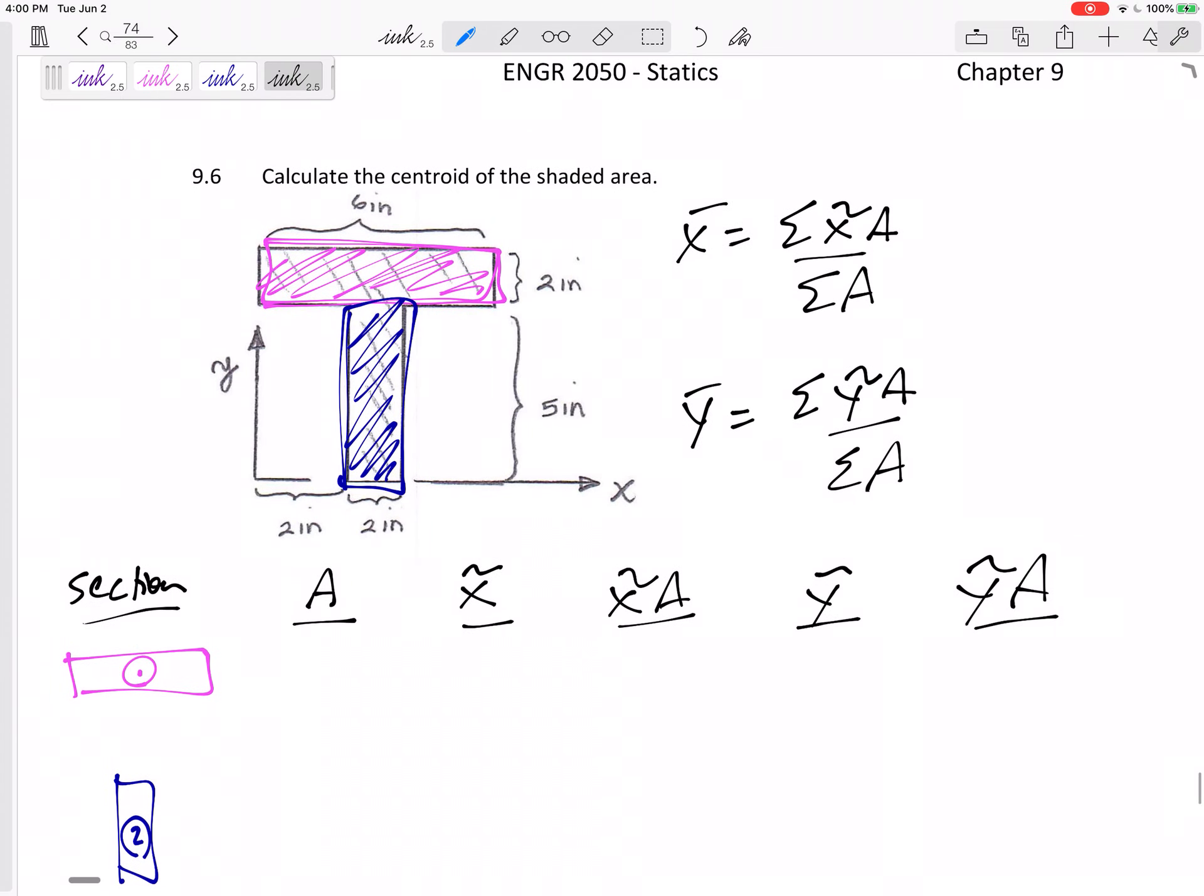All right. So section number one, what is its area? It is two by six, right? It is 12. What is its centroid location? Well, here's the centroid. Look at these axes and tell me where its centroid is. Its centroid would be right here at three.